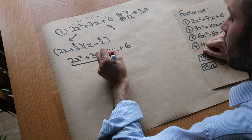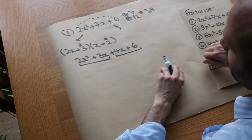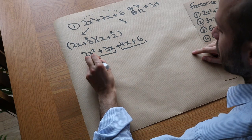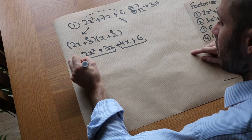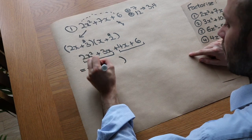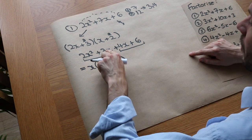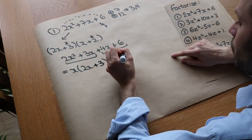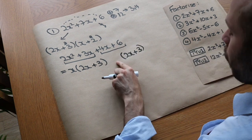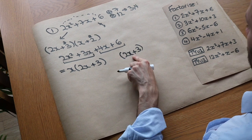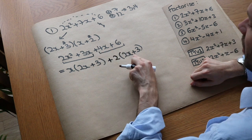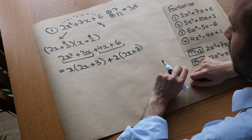We look at the first half and the second half and factorise them each independently. What's common to 2X squared and 3X? There's no factor common to 2 and 3, but we do have an X in common. So we take the X out, giving X times 2X plus 3. Then we duplicate that bracket and think what times 2X plus 3 gives 4X plus 6 — well it's 2. And don't forget the plus in the middle: 2 times 2X plus 3 gives 4X plus 6.